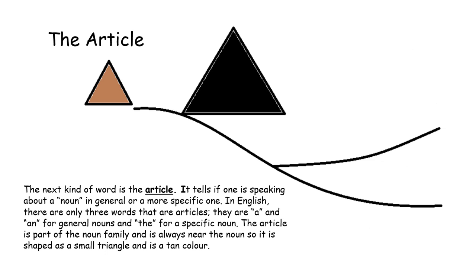The next kind of word is the article. It tells if one is speaking about a noun in general or a more specific one. In English, there are only three words that are articles: a and an for general nouns, and the for a specific noun. The article is part of the noun family and is always near the noun, so it is shaped as a small triangle and is a tan color.